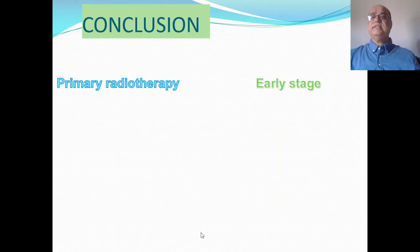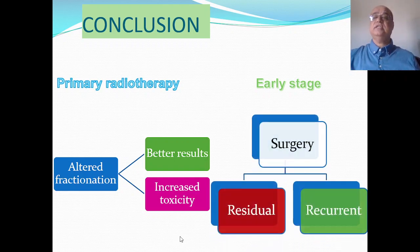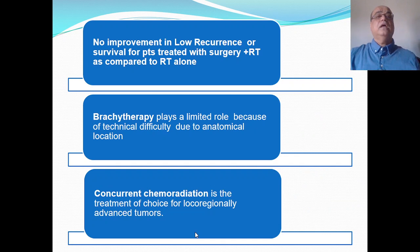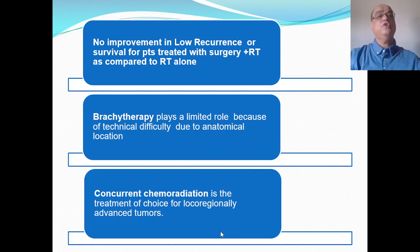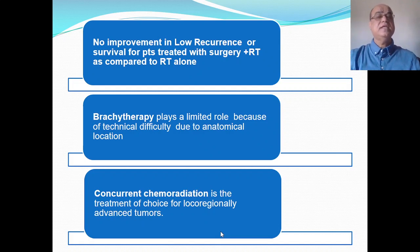In conclusion: primary radiotherapy is the preferred treatment in early stage tumors. Altered fractionation schedules produce better results but with increased toxicity. Surgery is preferred for residual or recurrent disease. There is no improvement in local recurrence or survival for patients treated with surgery plus radiotherapy compared to radiotherapy alone. Brachytherapy plays a limited role due to technical difficulty from anatomical location. Concurrent chemo-radiation (CCRT) is the treatment of choice for loco-regionally advanced tumors.